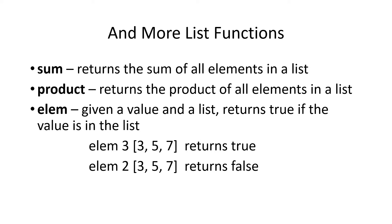Another very useful method is elem. Elem takes a number or a value and a list. It doesn't have to be numbers. It returns true if that element is in the list. In these two examples, the elements and the list are numbers. But they could be lists of strings, which are lists of lists, or lists of characters, or any sort of list.